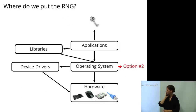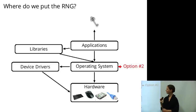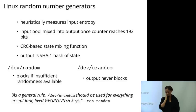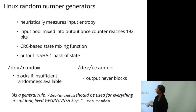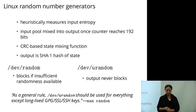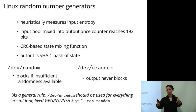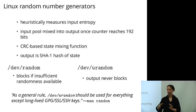So even if we have a hardware random number generator, maybe the operating system wants to do as well as it can on its own. Linux provides two random number generators with the same basis but slightly different behavior. They heuristically measure input entropy, maintaining a counter of how much entropy they think they've received. They collect entropy in an input pool, and the input pool is mixed into the output pool once the counter reaches a certain threshold.